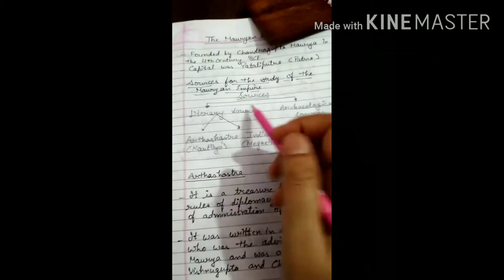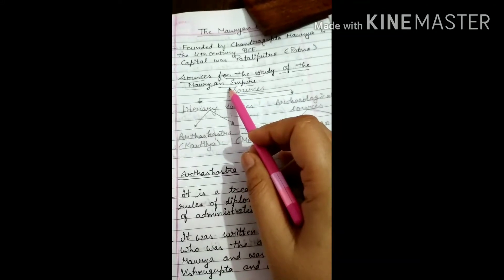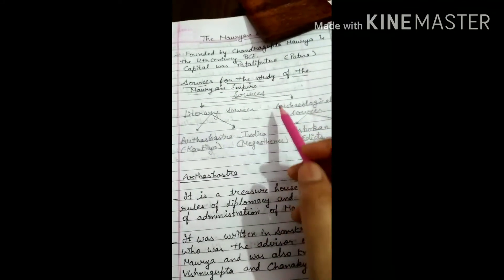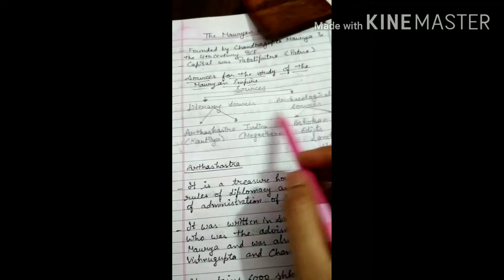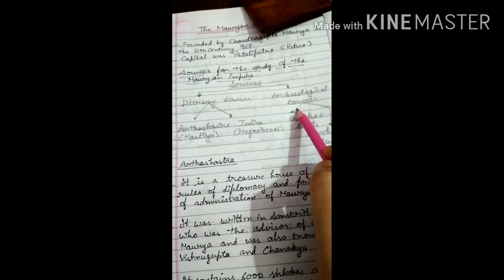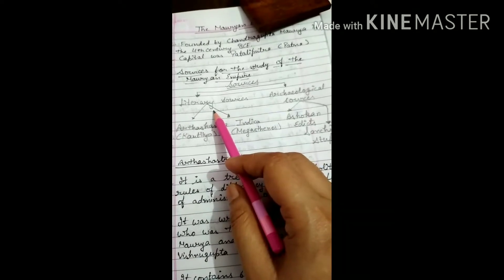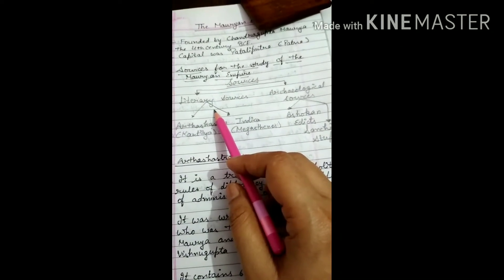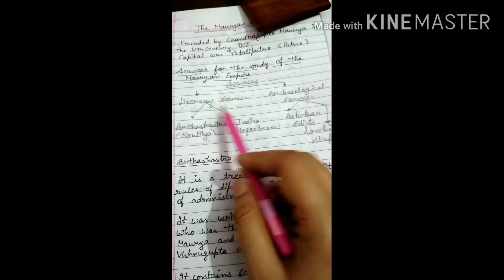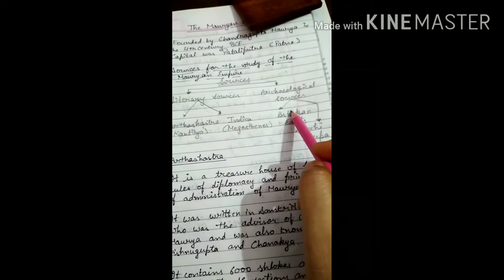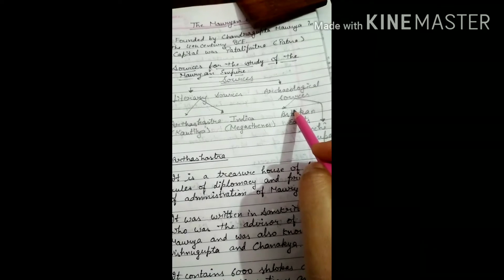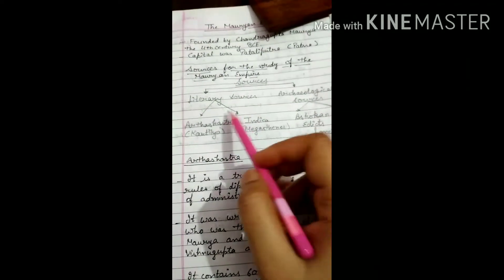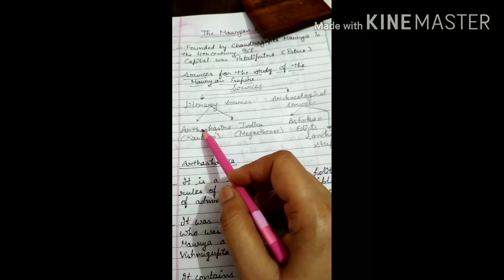Now our topic is, what are the sources of information that give us information about the Mauryan Empire? Sources of information are divided into two parts: literary sources and archaeological sources. Literary sources are those in which we have some written information available.